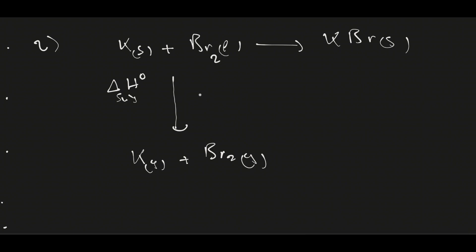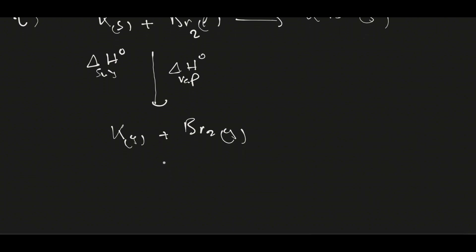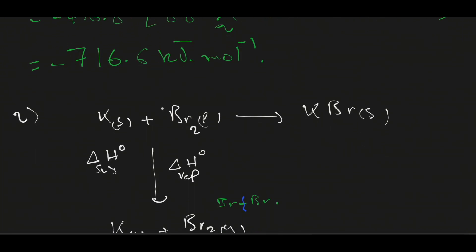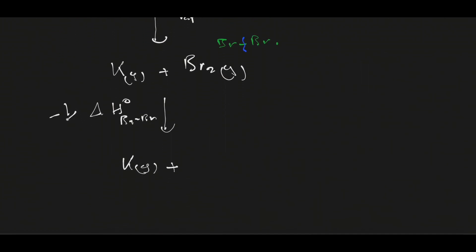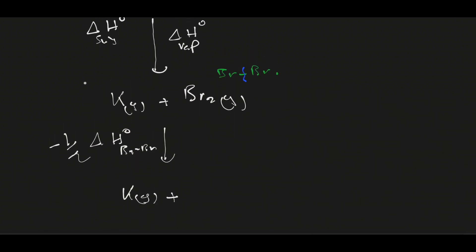Now bromine can be broken into two atoms. We have potassium in gaseous state, and since bromine is a diatomic molecule, we break this bond by providing energy corresponding to the bond energy of Br₂. Here also we take half this value. Since it is given as a negative value, we multiply by negative one-half in order to make it positive, because the energy to break a bond must be positive. Now we have bromine in gaseous atomic state.